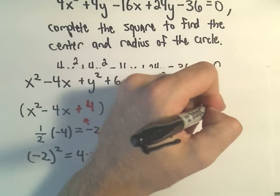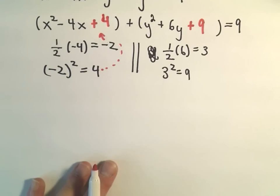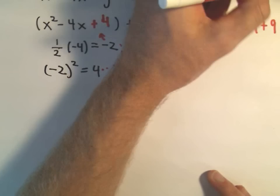On the right side, we had a 9 hanging out already. But again, really, what did we do on the left side? On the left side, we added a 4 and we added a 9. So I've got to do that to the right side as well.